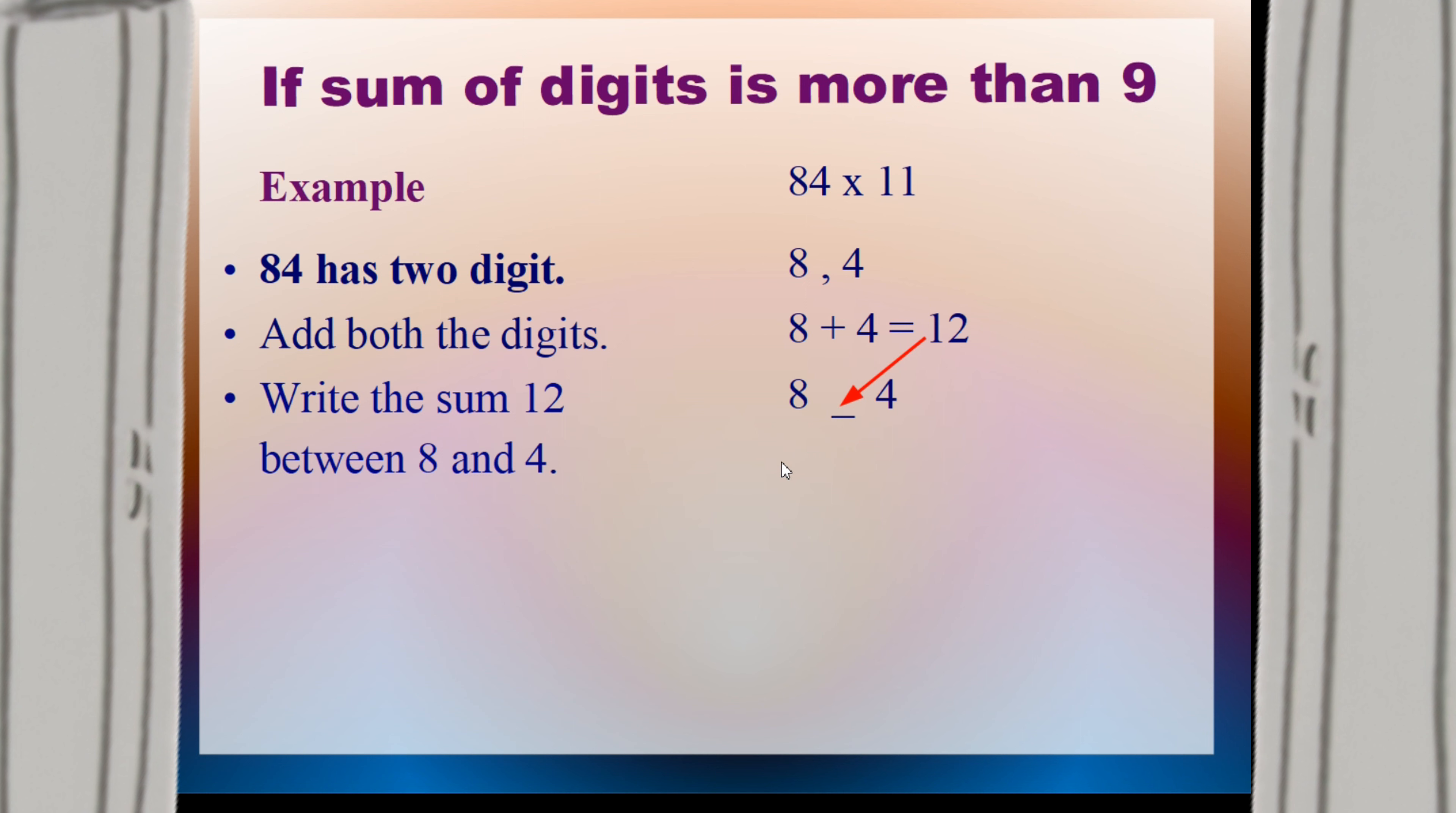Till this step, the steps are the same. But now another step is coming, which is the sum has 2 digits, so carry forward 1 to left. This 1 of 12 will be carried forward to 8. So your answer will be 9, 2, 4.